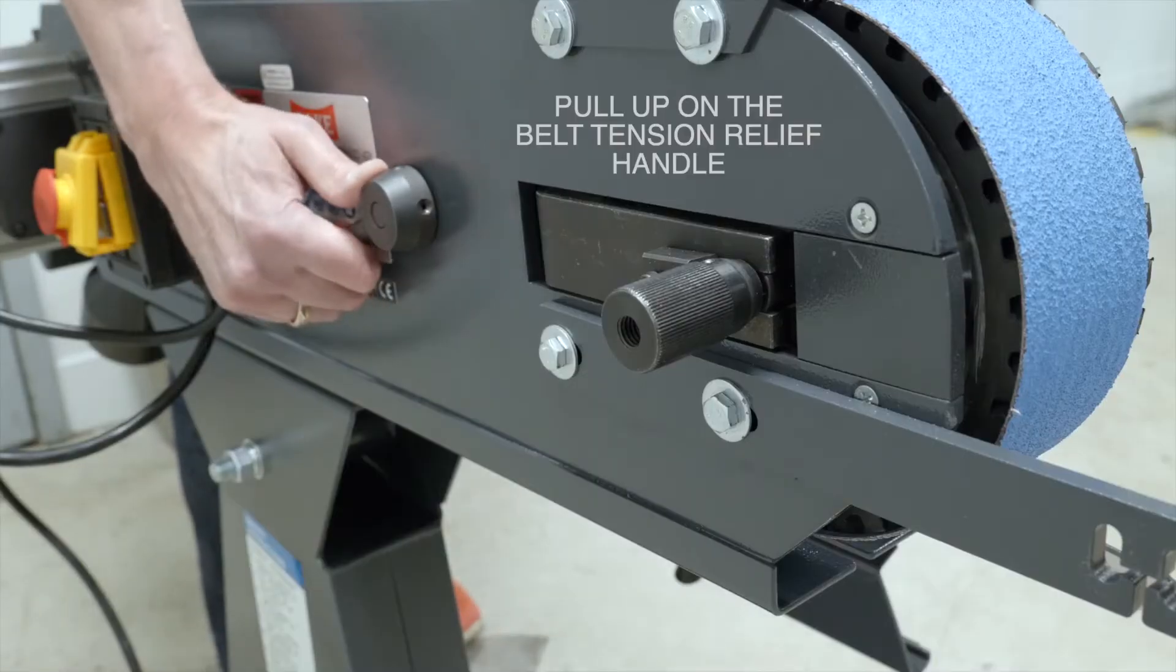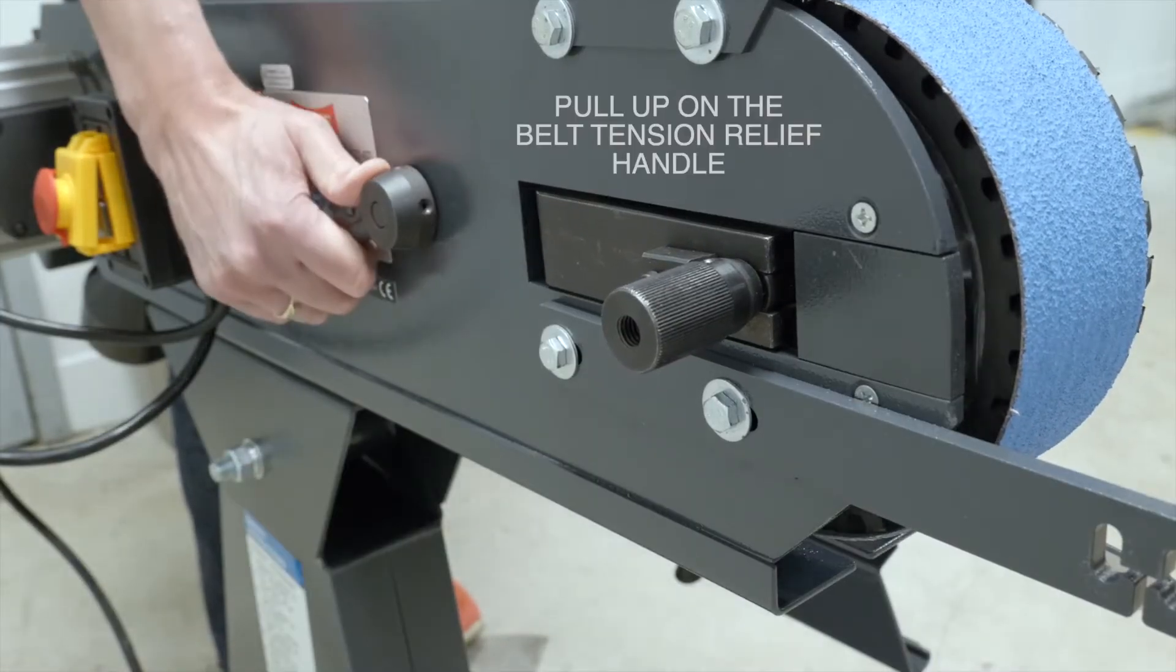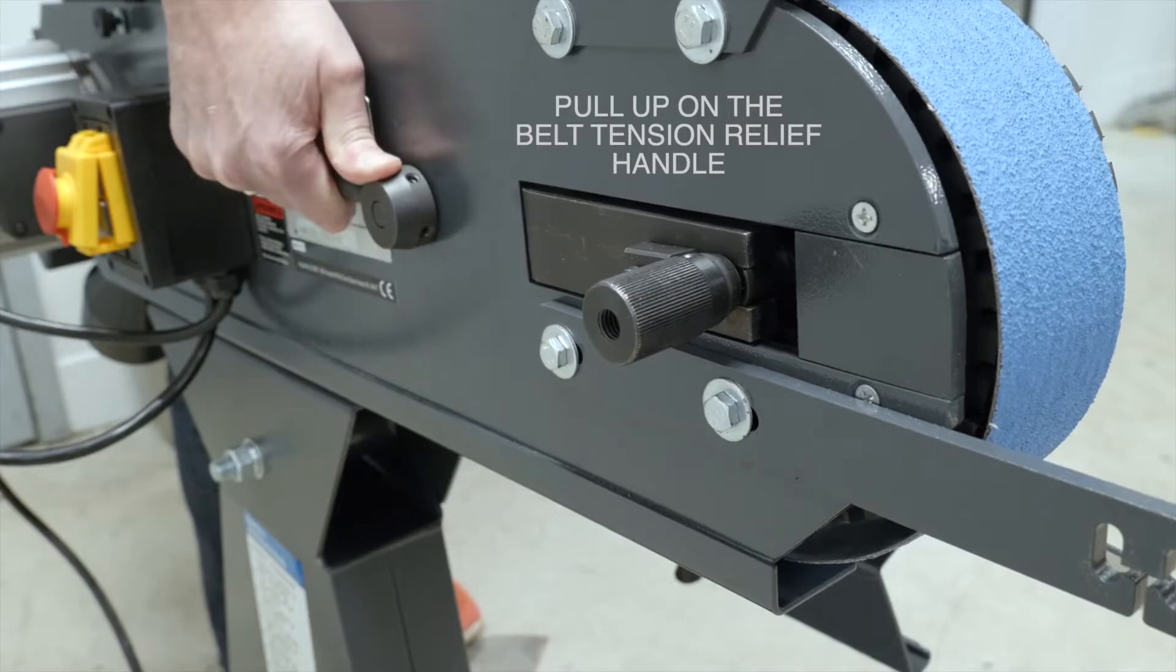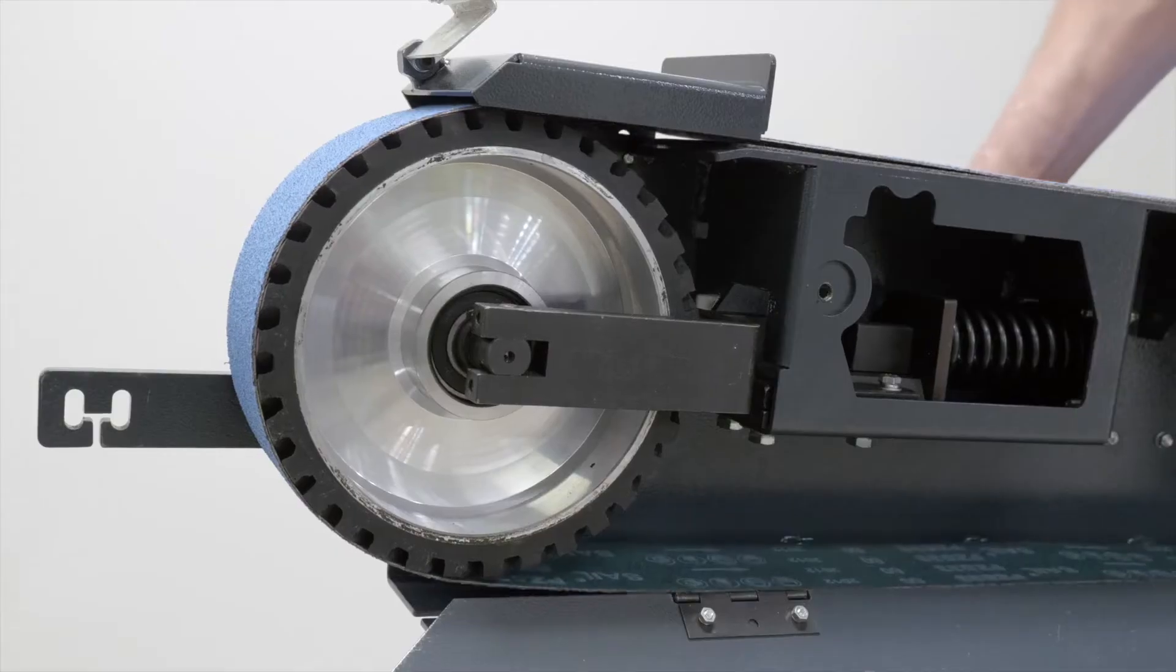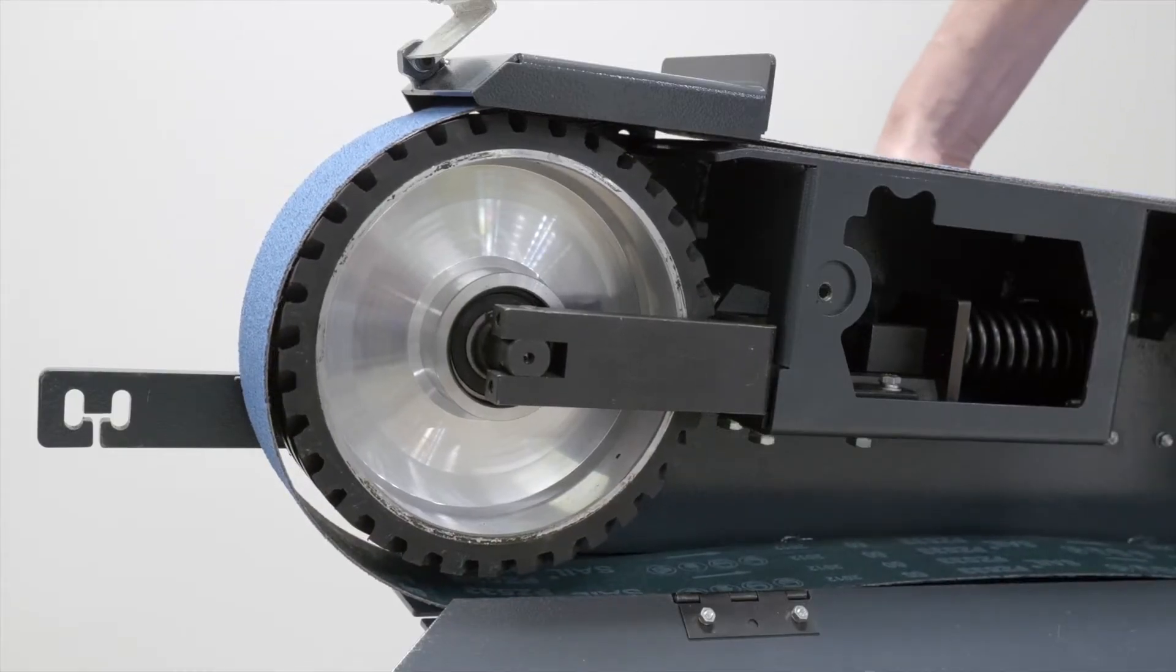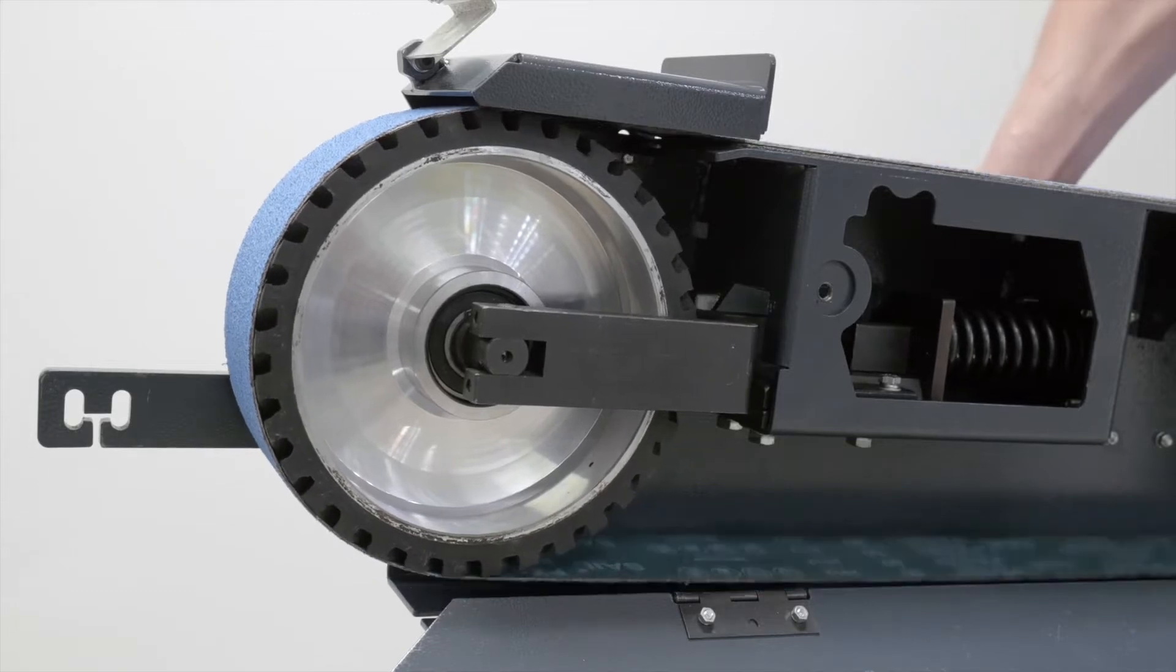On the side of the machine, you'll find the belt tension relief handle. If you give a good strong pull upward on that handle, it will compress the spring and allow you to take off the belt.